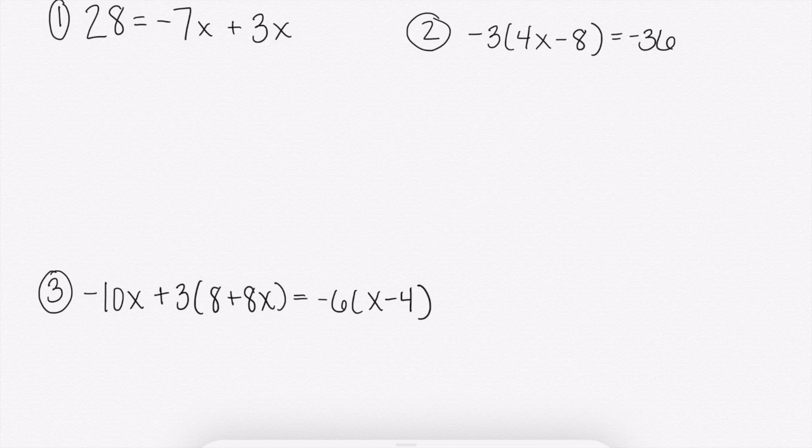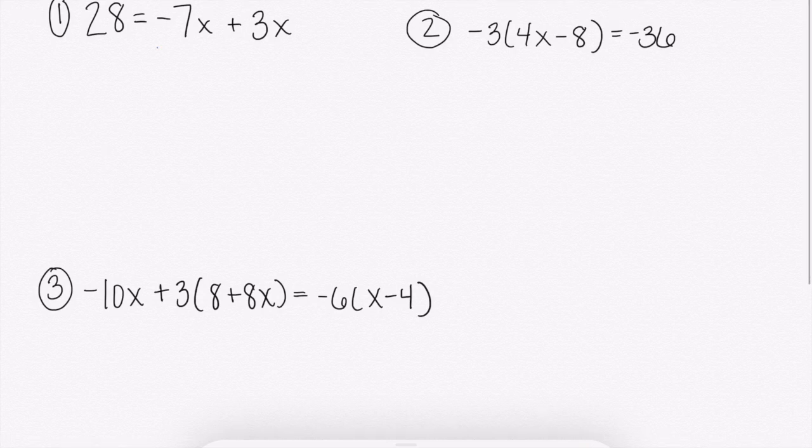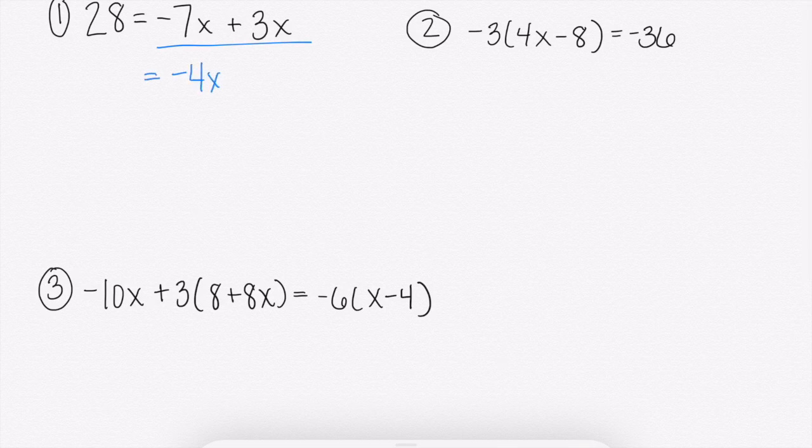I have three examples here that show a variety of different multi-step equations. So number one, you can see on the right-hand side, we have negative 7x plus 3x. So this one is a multi-step because we have to combine like terms first. If your like terms are not already combined on the same side, like that negative 7x and 3x, you need to combine those first.